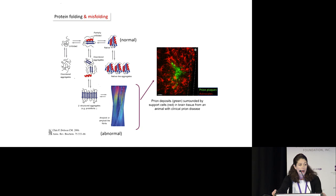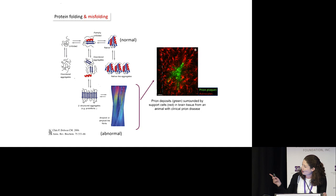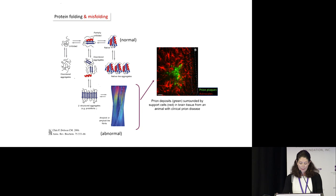Now in the case of prion disease, these go on to accumulate in the tissues of an infected host. You can see the prion plaques there in green, and they're surrounded in red denoting the support cells surrounding the prion plaque. This is a brain slice from an animal that has clinical prion disease.